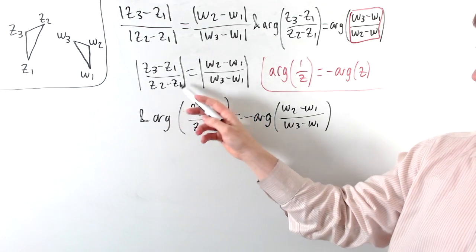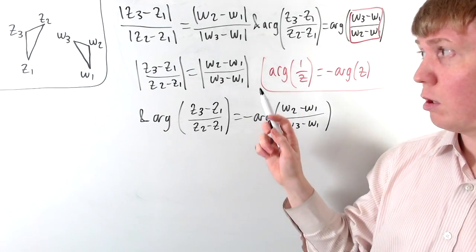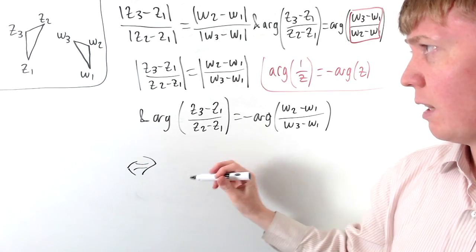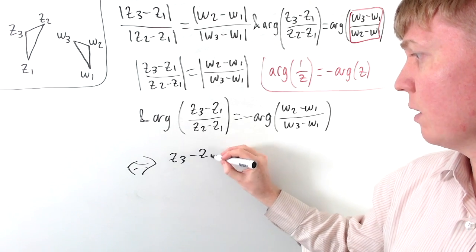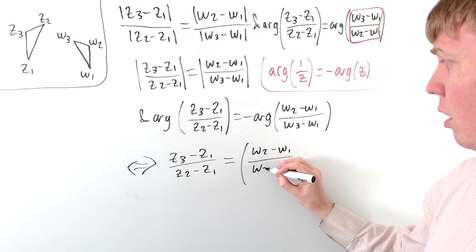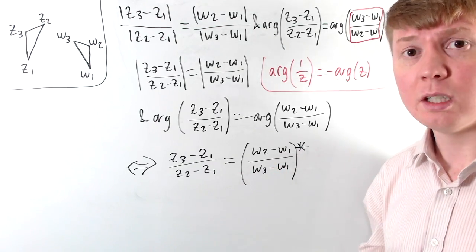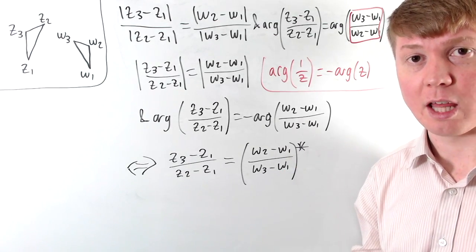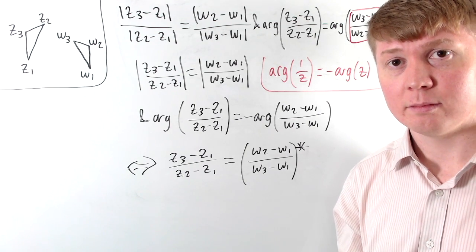So we have two complex numbers: Z3 minus Z1 over Z2 minus Z1, and W2 minus W1 over W3 minus W1. These have the same modulus but the argument of one is the negative of the argument of the other — meaning they are complex conjugates. So Z3 minus Z1 over Z2 minus Z1 equals the complex conjugate of W2 minus W1 over W3 minus W1. This gives us two different ways of testing for similar triangles in the complex plane depending on orientation.